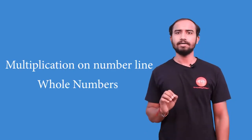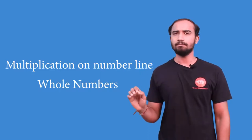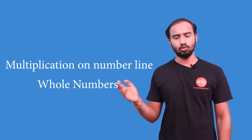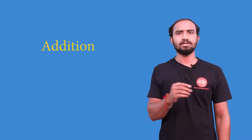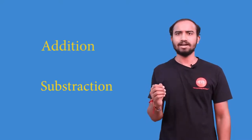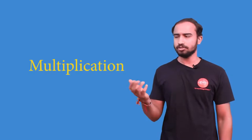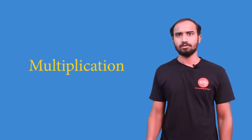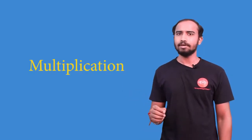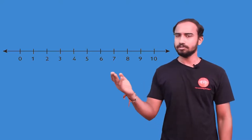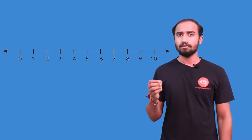Now we are going to see how multiplication is shown on the number line in whole numbers. Previously we have seen how addition and subtraction work. In this, we are going to see how multiplication is shown, so let's take an example to clarify. Our number line is shown.